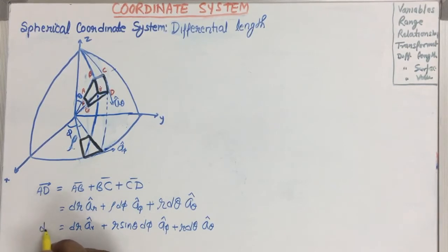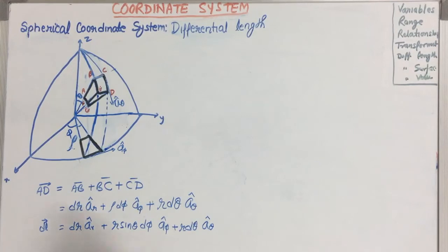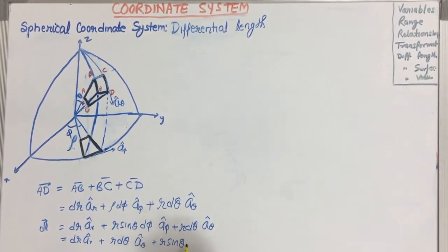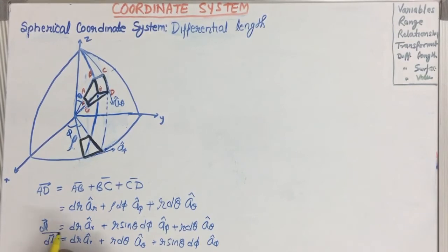So now, AD is the differential length that can be written like that. So the proper writing in proper sequence: dl = dR·AR + R·dθ·Aθ + R·sinθ·dφ·Aφ. This is the differential length.